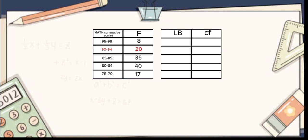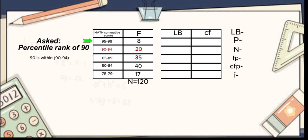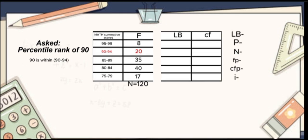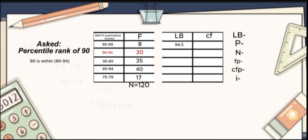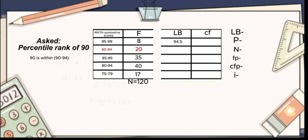So let's solve for the third column or the lower boundaries. Let's start at the top under the column of math summative scores, which is 95 to 99. To get the lower boundary, just subtract the lower limit by 0.5. The lower limit is the lower number, so the lower limit of 95 to 99 is 95. Then 95 minus 0.5 is 94.5. The process is still the same. Next is 90 to 94. The lower limit is 90, so 90 minus 0.5 is 89.5, and so on.